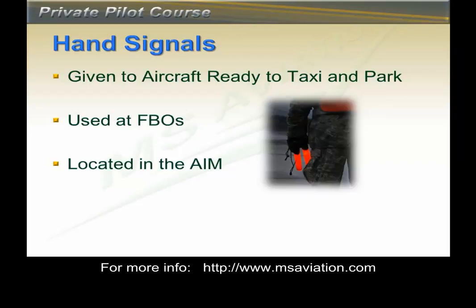The last thing to cover is hand signals. These are standard marshaling signals used by ground crew to communicate what they want you to do with your aircraft, normally regarding entering a ramp area to park and leaving a ramp area. You will need to be familiar with the more common signals to park at airports with such personnel. The AIM, or Aeronautical Information Manual, has a complete list and you should look these over at the end of this lesson. This is the end of this lesson.